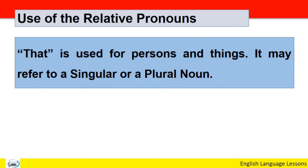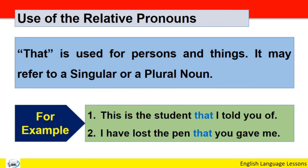'That' is used for persons and things; it may refer to a singular or plural. 'That' دونوں کے لئے استعمال ہوتا ہے چاہے persons ہوں یا things، singular ہو یا plural۔ یعنی 'that' کو ہم 'who' کی جگہ پہ بھی اور 'which' کی جگہ پہ بھی استعمال کرتے ہیں۔ For example: 'This is the student that I told you of.' 'I have lost the pen that you gave me.' پہلے میں person اور دوسرے میں thing — دونوں کے لئے 'that' بطور relative pronoun استعمال ہوا۔ تو 'that' کا use persons, things، اور animals تینوں کے لئے کیا جا سکتا ہے۔